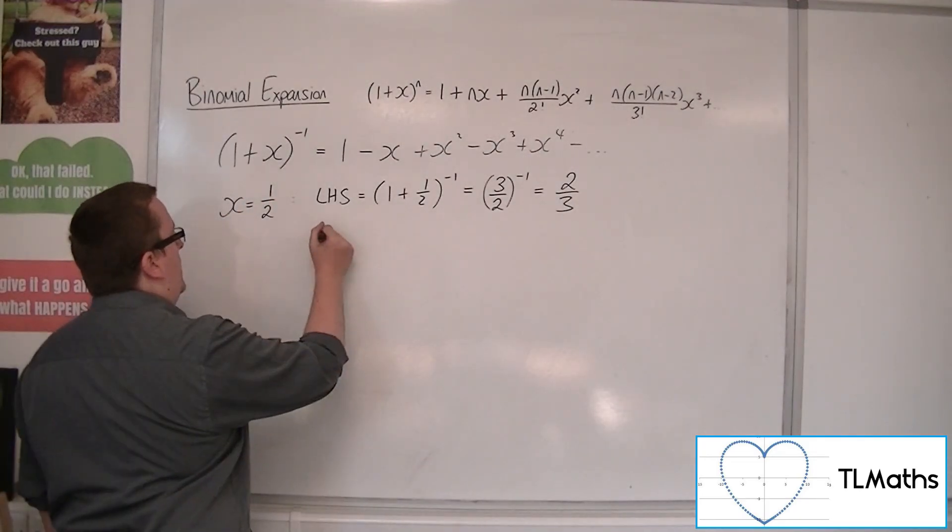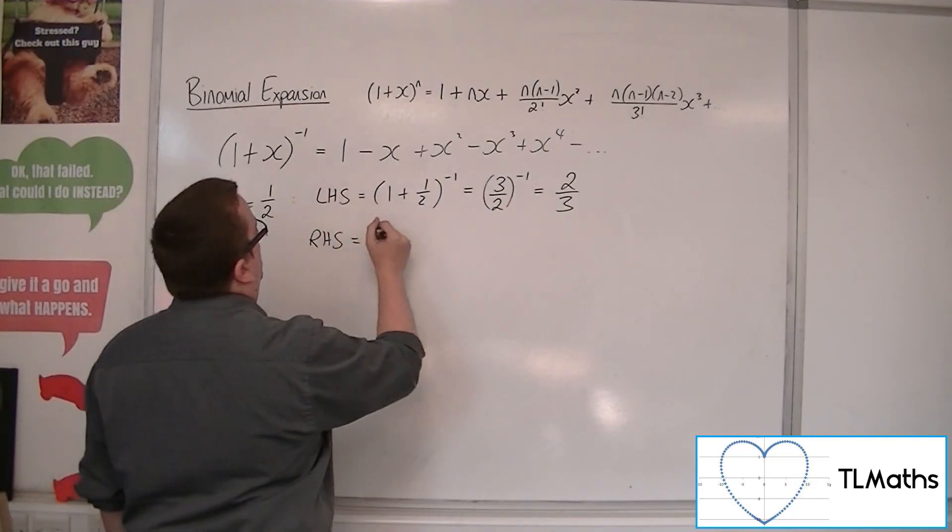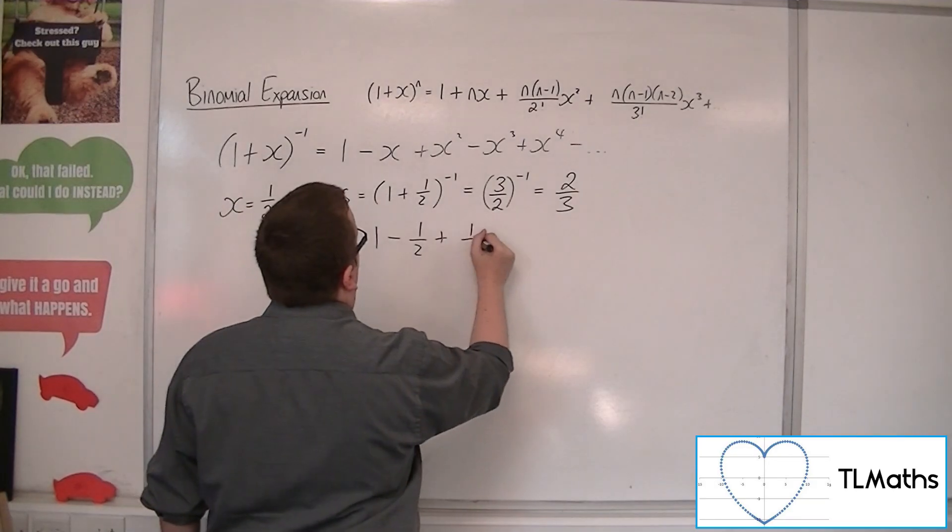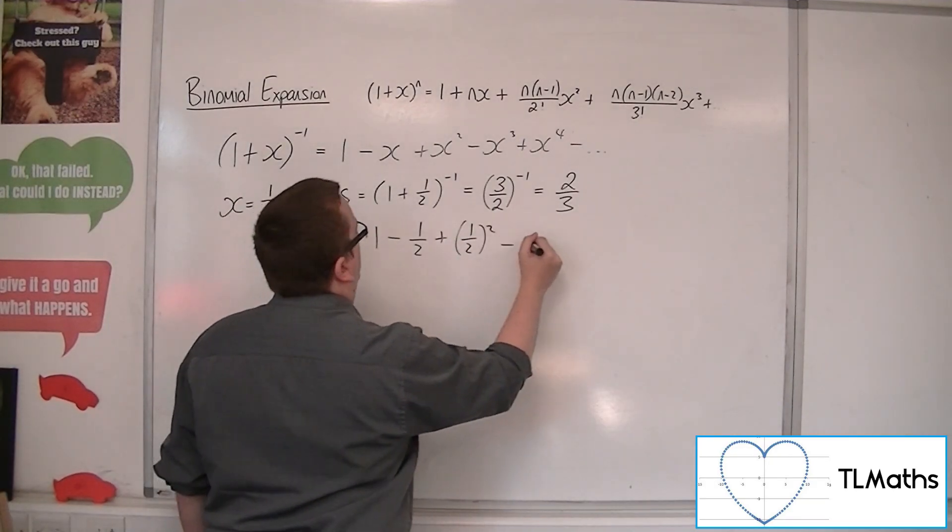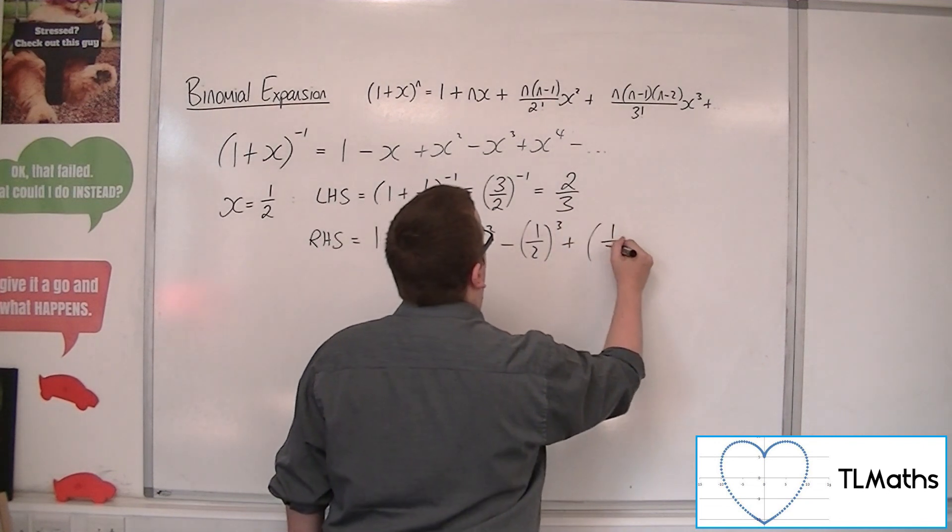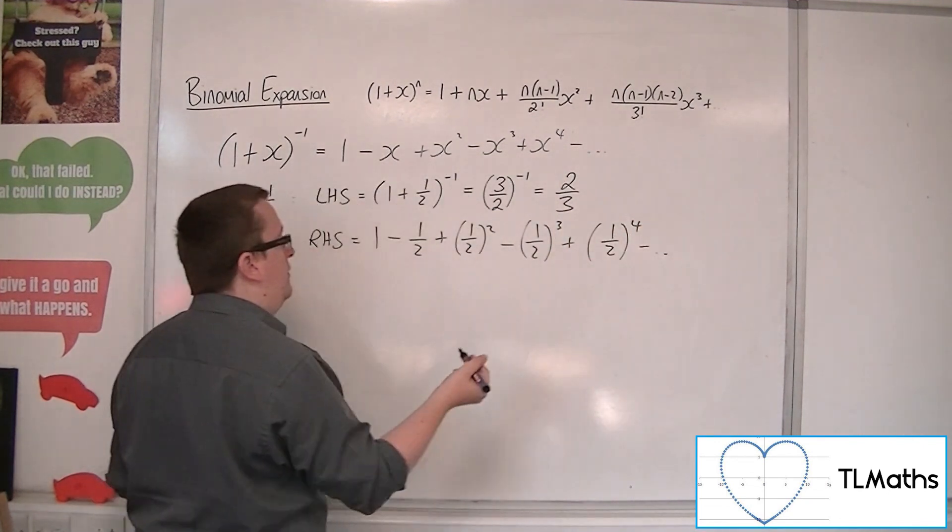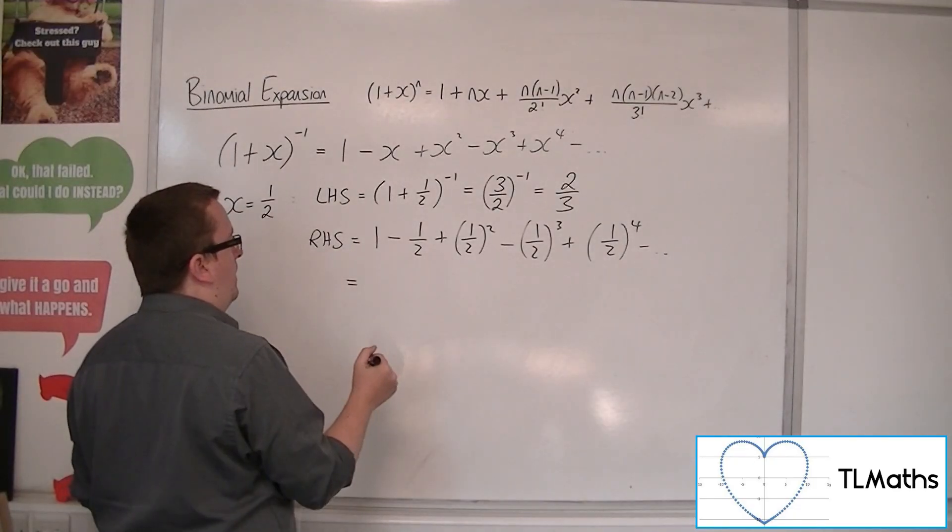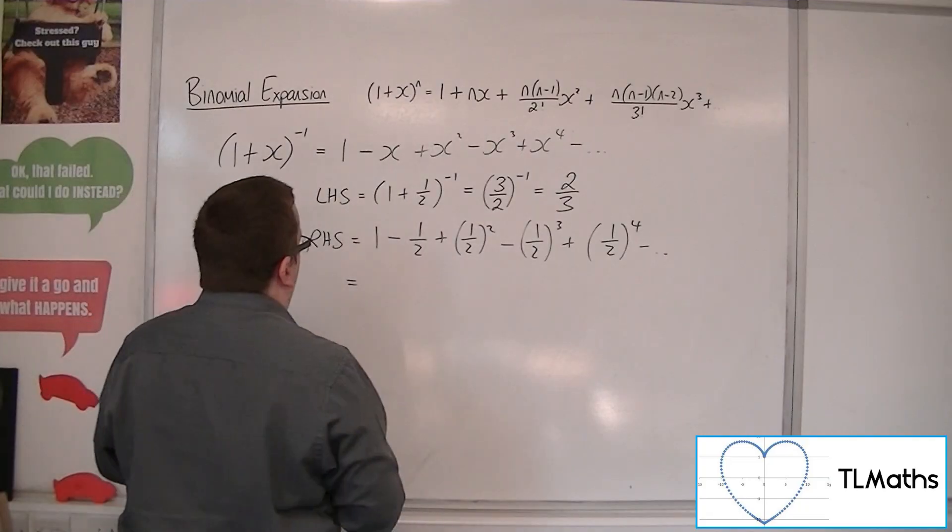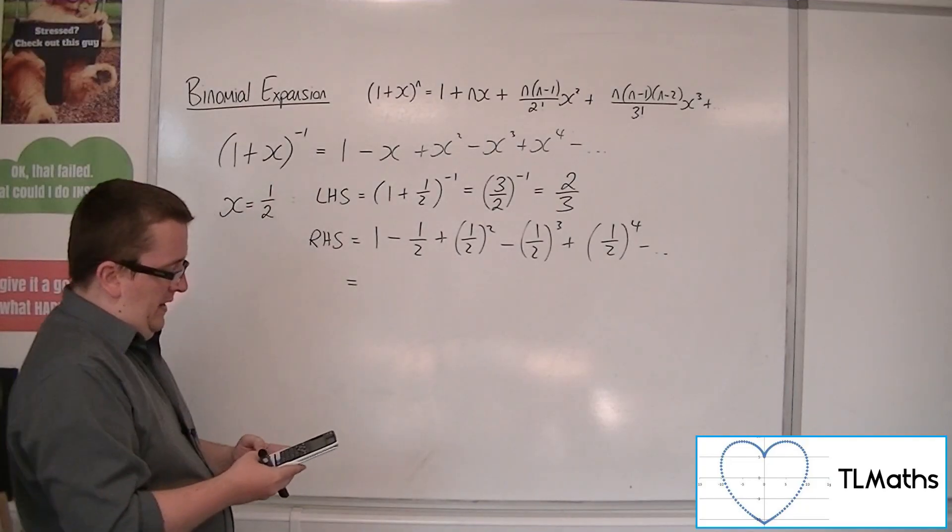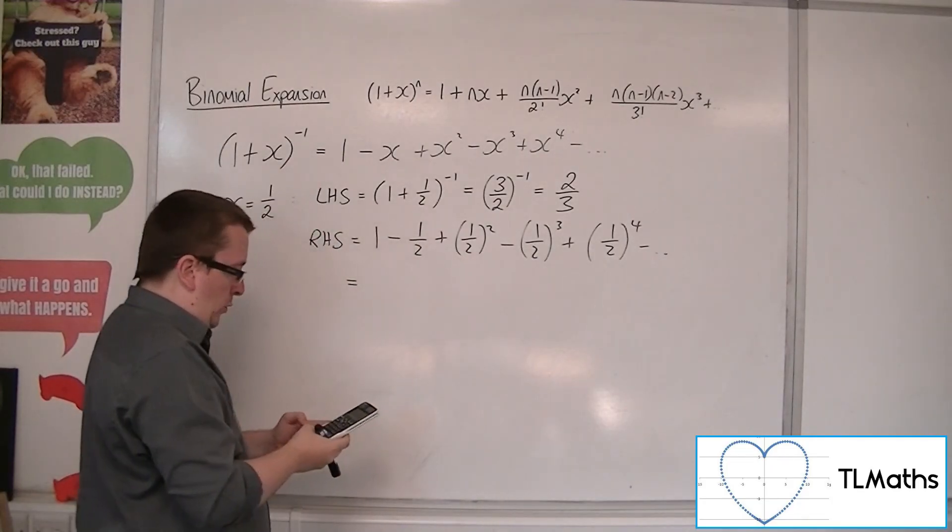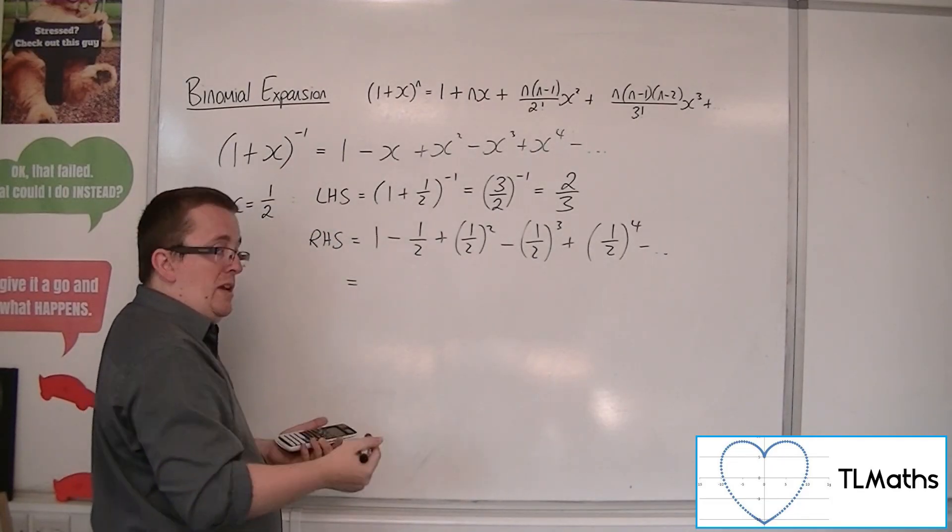Now, the right-hand side would be 1, take away a half, plus a half squared, take away a half cubed, plus 1 half to the 4, take away a half to the 5, etc. So, if we just do 1, then take away a half, we get 1 half. Plus a quarter gets us 3 quarters.